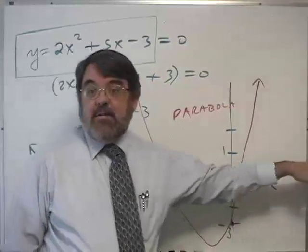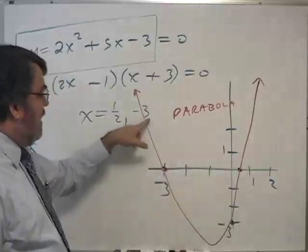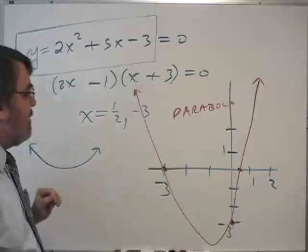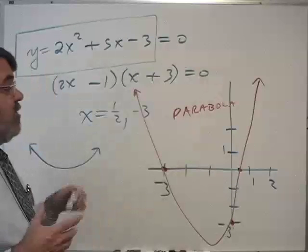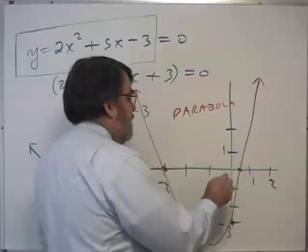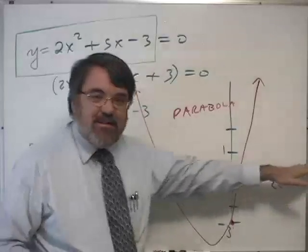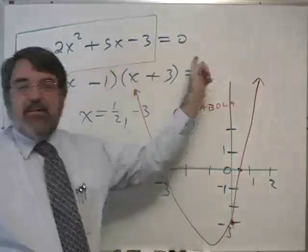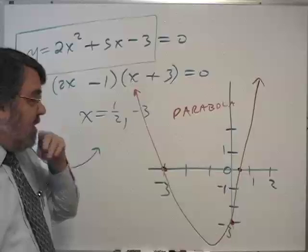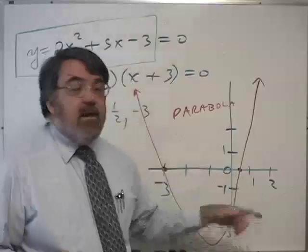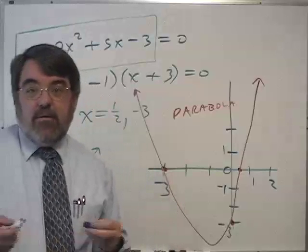it has to cross the x-axis in two places. I'm sorry, the x-axis in two places. And it crosses at negative three and positive one half. And so, when you set this equal to zero, you're trying to find out, well, where is y equal to zero? Well, where is y equal to zero? It's right here, along this x-axis. And so, setting y equals zero means you're asking, where does this coincide with the x-axis? Where does it cross the x-axis? It has to cross in two places. So, that's why we normally get two answers to these quadratic equations.